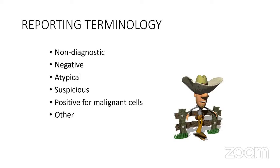Various reporting terminologies exist across cytology subspecialties: the Bethesda system for GYN and thyroid, the Milan system for salivary glands, the Paris system for urinary cytology, the Yokohama system for breast cytology, the Sydney classification for lymph node cytology, the International System for reporting serous fluid cytopathology, and the WHO soft tissue cytopathology system. The general framework across all systems is: non-diagnostic, negative/benign, atypical, suspicious for malignancy, and positive for malignant cells.